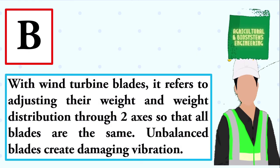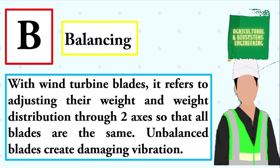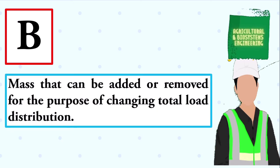With wind turbine blades, it refers to adjusting their weight and weight distribution through two axes so that all blades are the same. Unbalanced blades create damaging vibration. The answer is: balancing. Mass that can be added or removed for the purpose of changing total load distribution. The answer is: ballast.